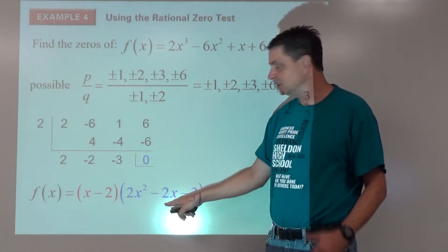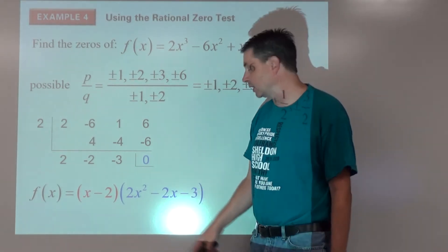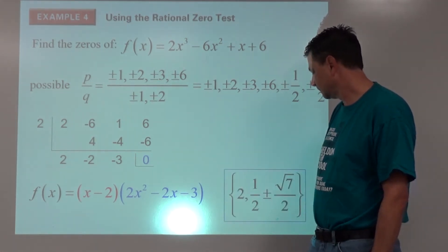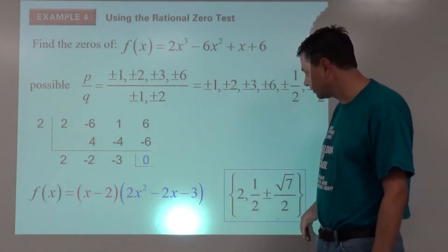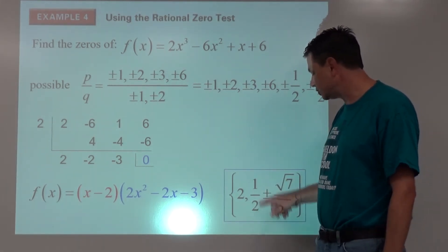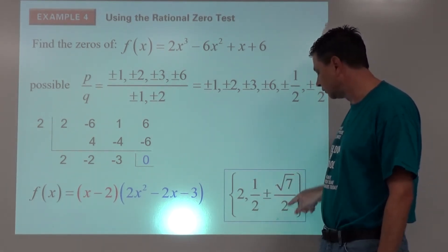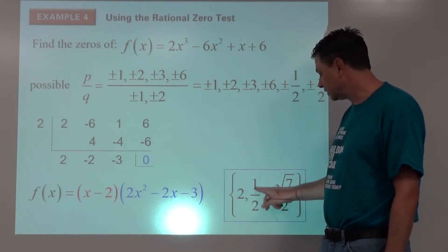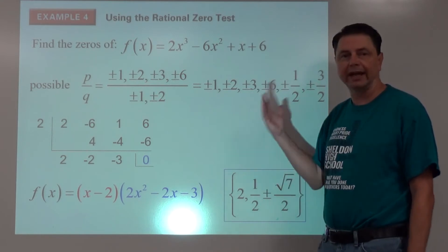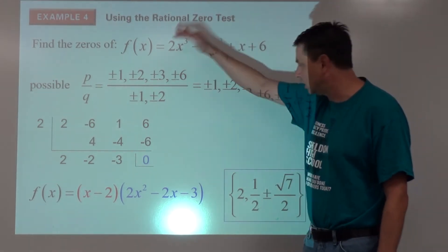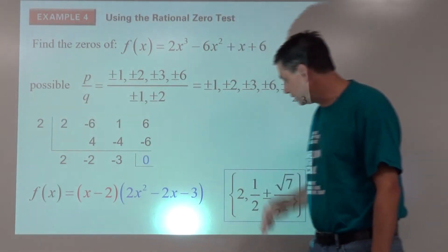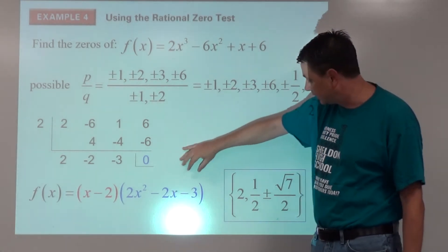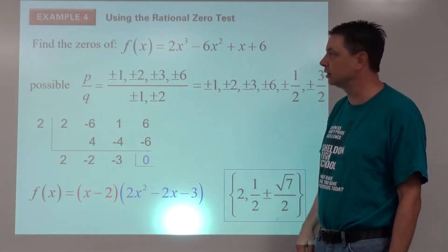Now we could try to factor 2x² minus 2x minus 3, but it doesn't factor. So we go to the quadratic formula. Working through it, we get one plus or minus the square root of seven, all over two. So we found all the zeros — used our graphing calculator to find x equals 2, and then once it's down to a quadratic we use our quadratic solving methods to find the remaining zeros.